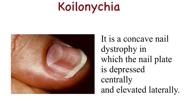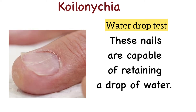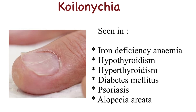Koilonychia is a concave nail dystrophy in which the nail plate is depressed centrally and elevated laterally. These nail changes are capable of retaining a drop of water. It is most commonly seen in patients with iron deficiency anemia. Other associated conditions include hypothyroidism, hyperthyroidism, diabetes mellitus, psoriasis, and alopecia areata.